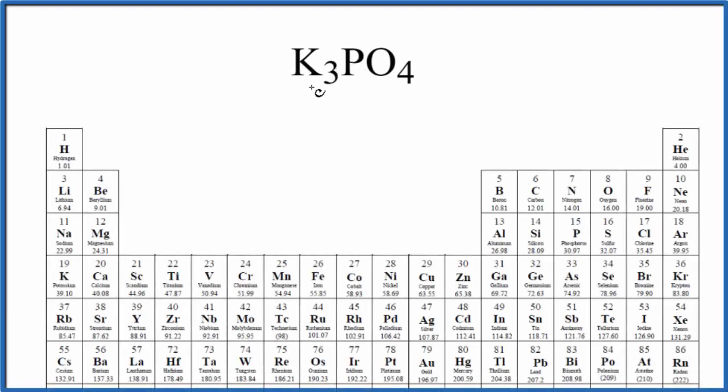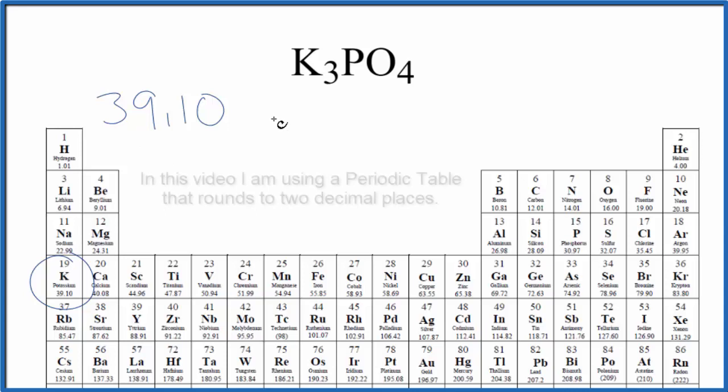In this video, we'll find the molar mass for K3PO4, potassium phosphate. On the periodic table, potassium is 39.10, and the units are grams per mole. I won't write that each time. Let's do that at the end.